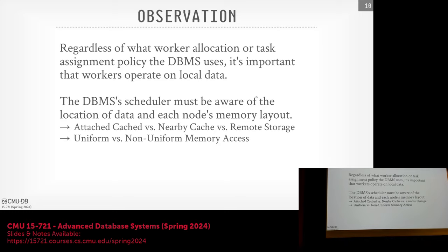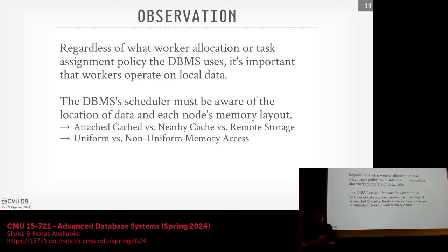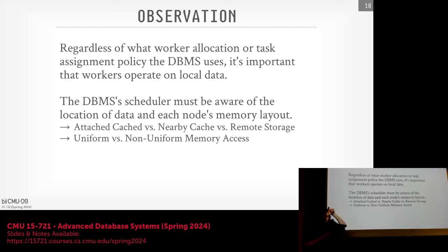Regardless of how we allocate tasks to resources, it's important to make sure the data workers process is ideally local to that worker. In the Hyper paper — an in-memory database — local means the same NUMA region. In a distributed system with a shared-disk architecture, the cost of fetching data from S3 could be the same for every worker node assuming the same data center and region. But once we start caching things, every compute node could have its own local copy of files read from S3, and we want tasks assigned to nodes that have a local copy of that data.